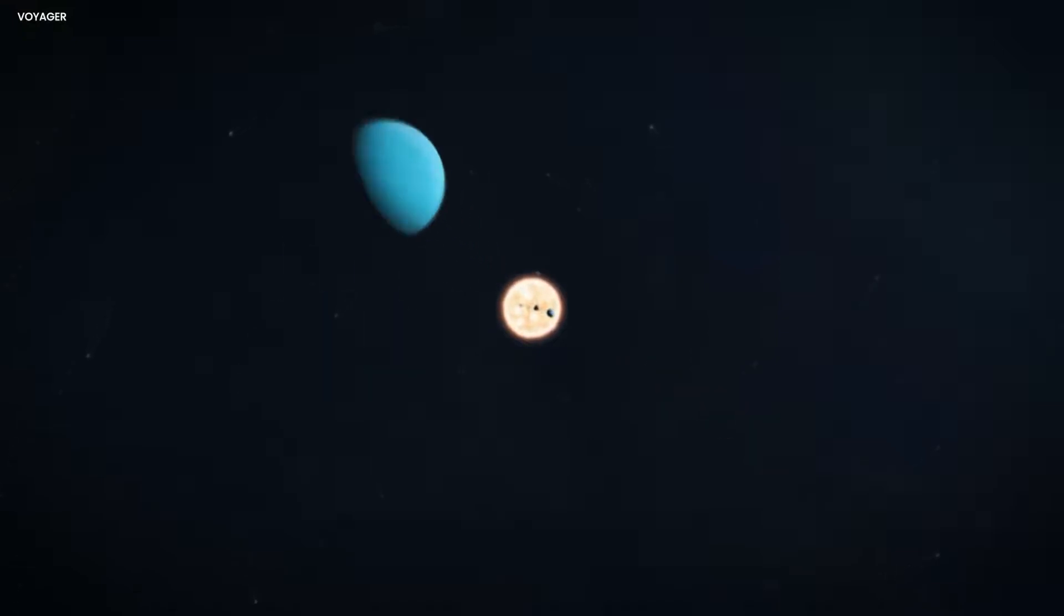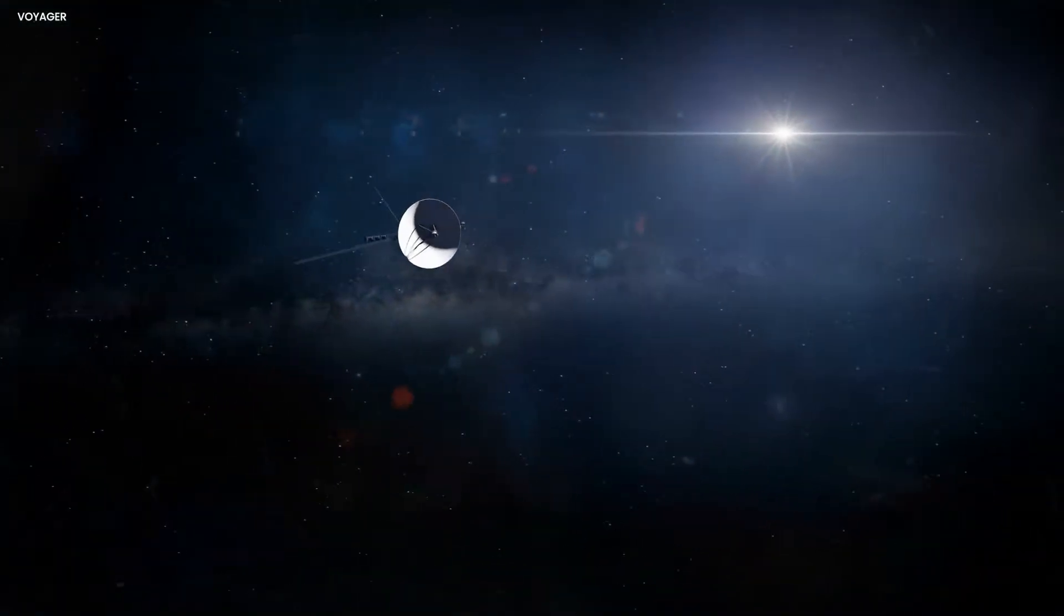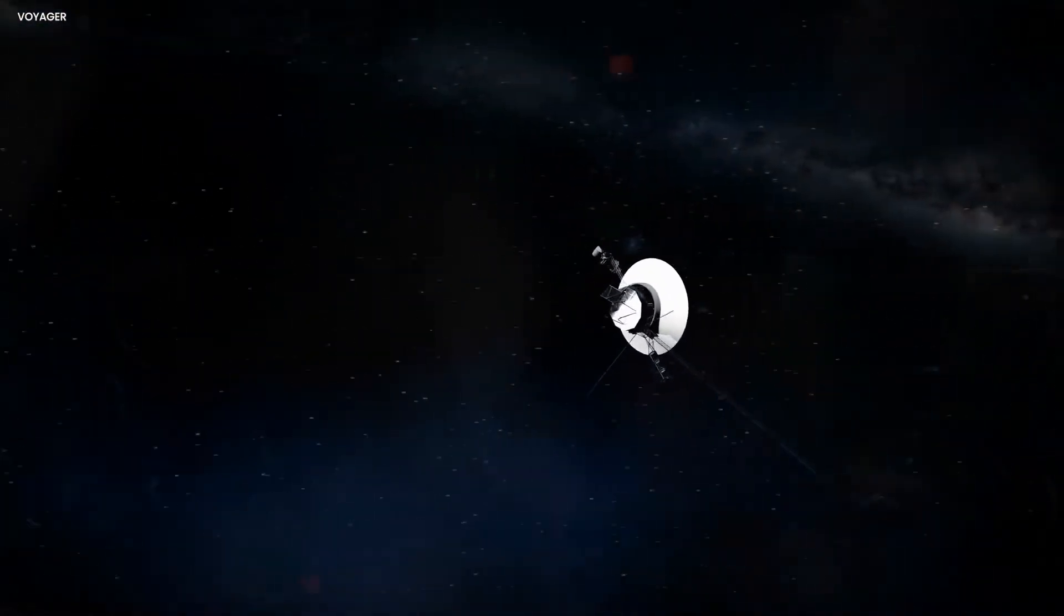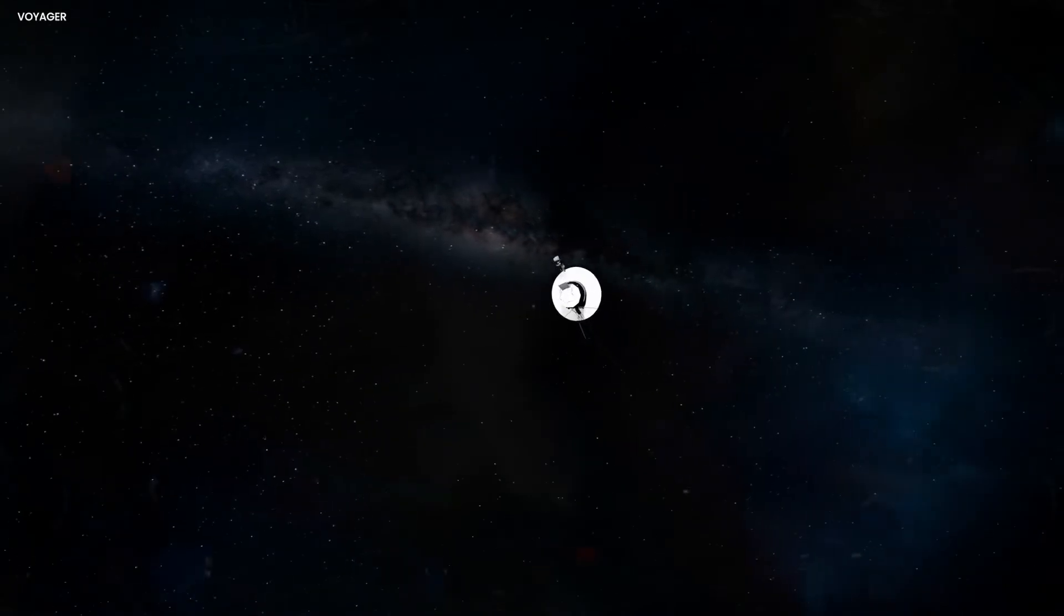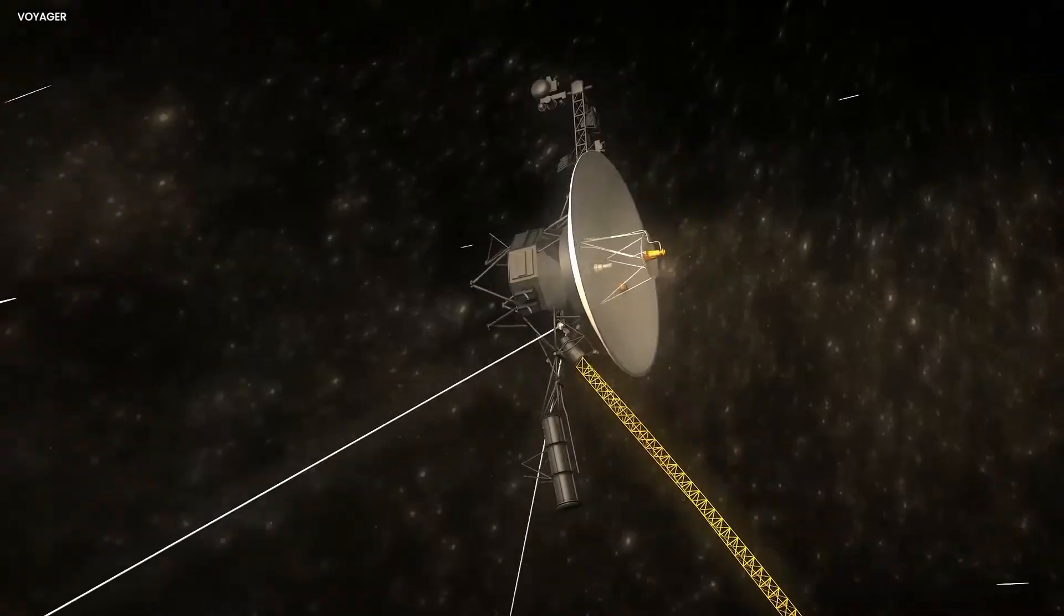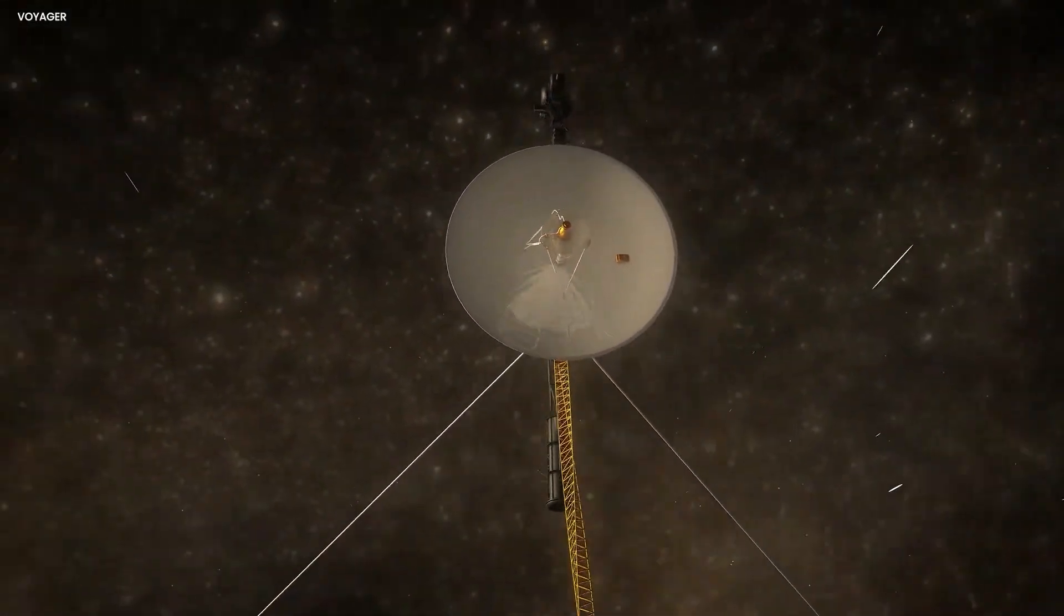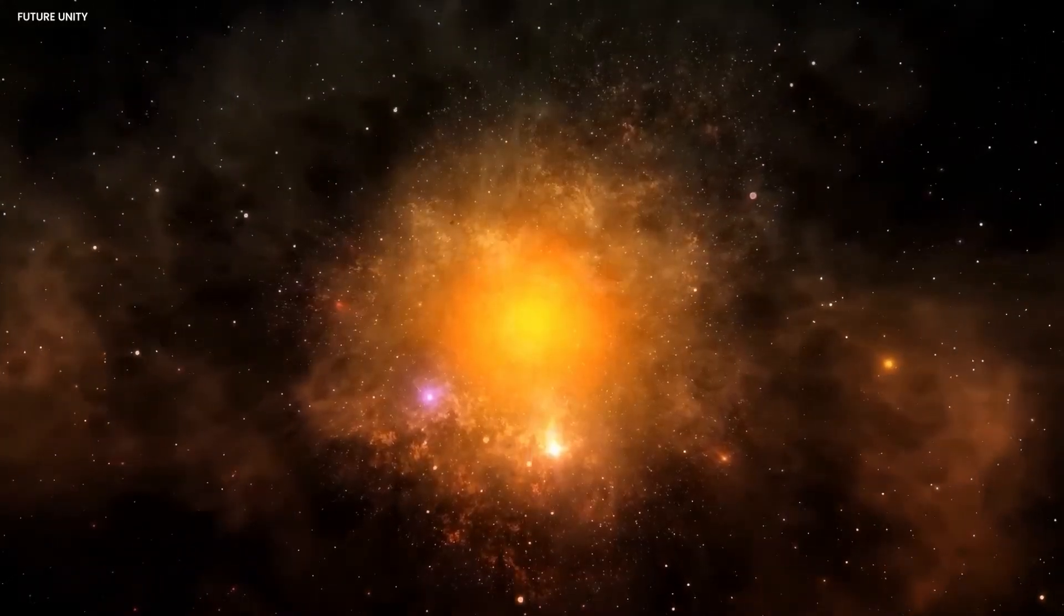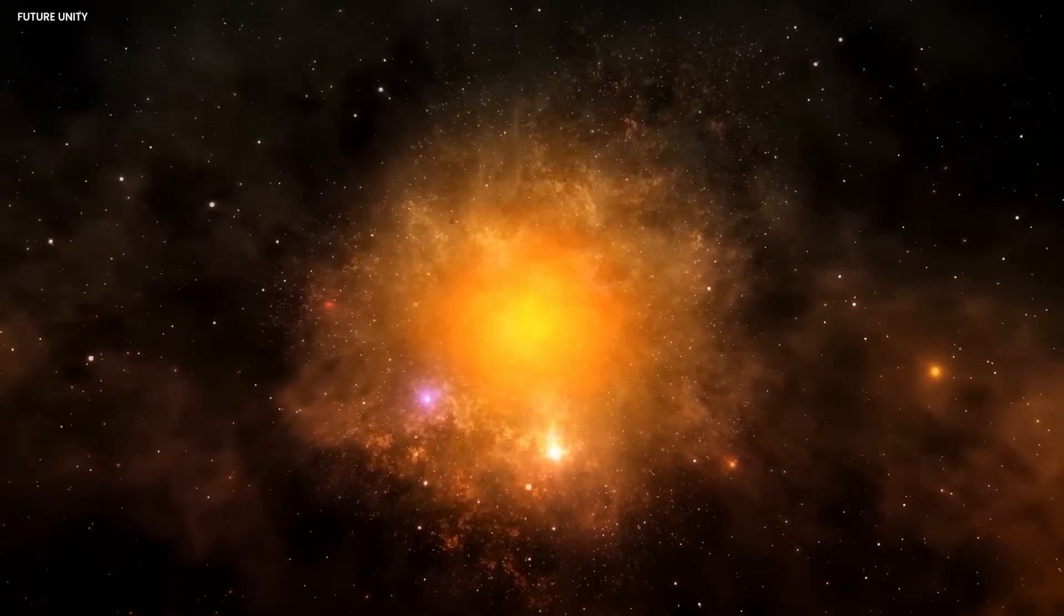Did you know that the Voyager 1 probe almost died in 2022? Voyager 1 is roughly 14.8 billion miles away from Earth, and it's roughly 45 years old. Anything can go wrong with this ancient vessel that's unbelievably far from home, especially when you consider that we don't know much about this distant realm of our solar system.